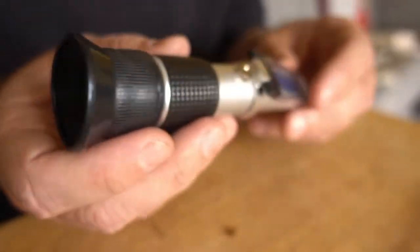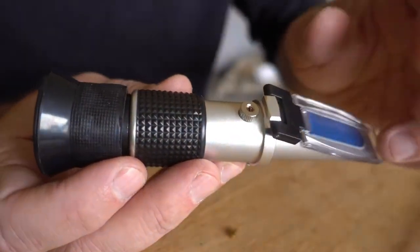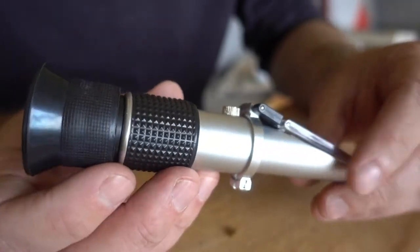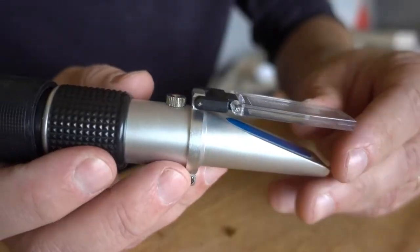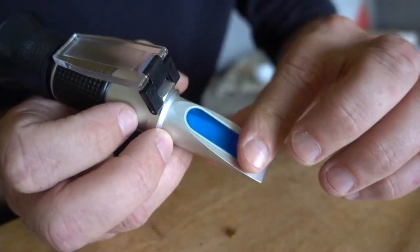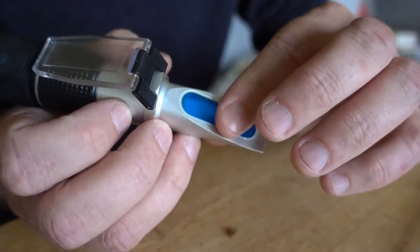So what we got here is a refractometer. It's sort of a portable microscope that we use to determine the moisture content of the honey that we've harvested from our bees.